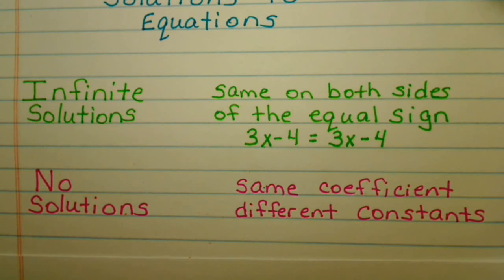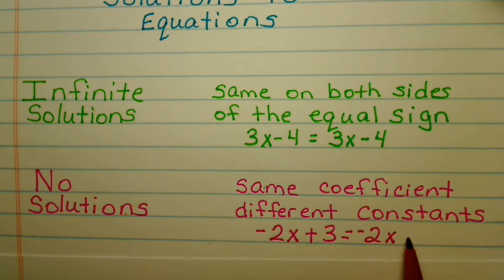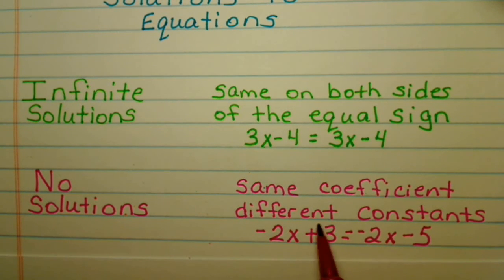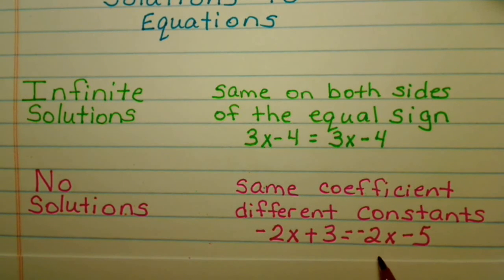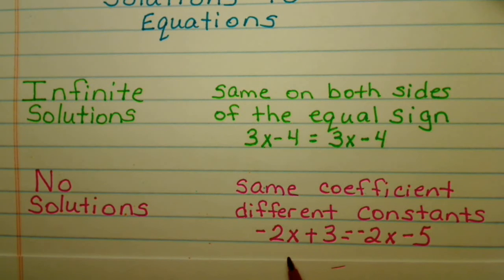For example, if you follow through the first two steps of solving a multi-step equation and you get something like 2x plus 3 equals negative 2x minus 5 — you'll see we have the same coefficient and variable, but we have different constants. If you did the inverse operation and canceled out your coefficients, you would be left with 3 is equal to negative 5. Three is never equal to negative 5, so that is no solution: same coefficient and variable, different constant.